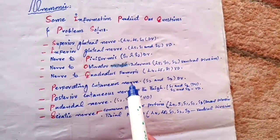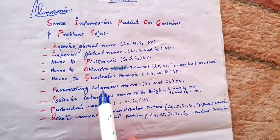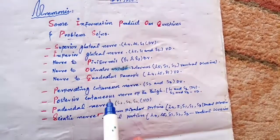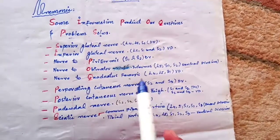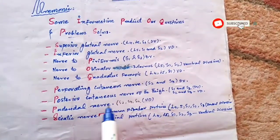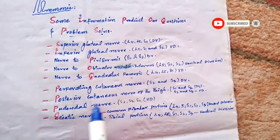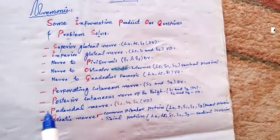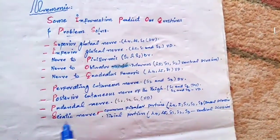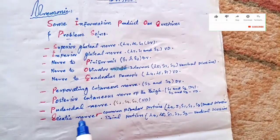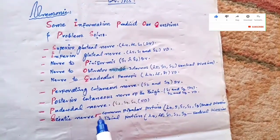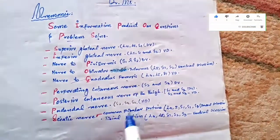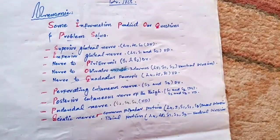The perforating cutaneous nerve supplies the skin of the middle of the buttock. The posterior cutaneous nerve of the thigh supplies the posterior buttock as well as the posterior thigh. The pudendal nerve supplies the perineal skin, muscles, and mucous membranes of the lower half of the anal canal. The sciatic nerve is the largest nerve of the sacral plexus as well as the largest nerve in the body, divided into two divisions: the common fibular portion arising from the dorsal division, and the tibial portion arising from the ventral division of the sacral plexus.